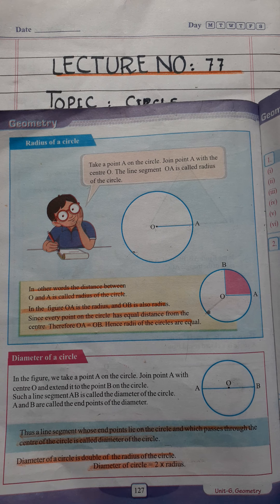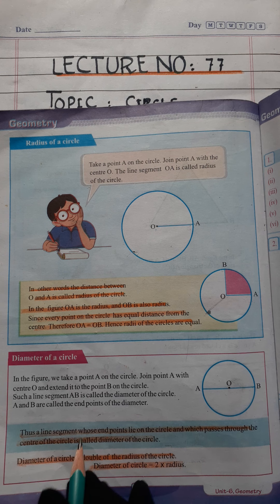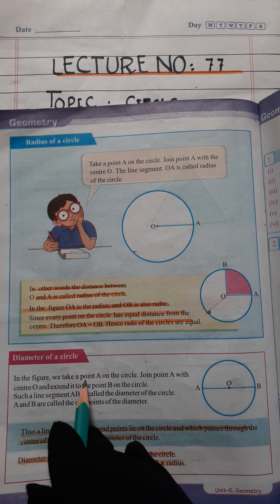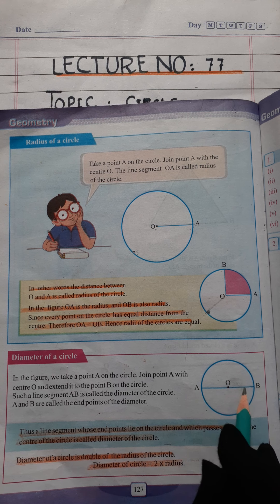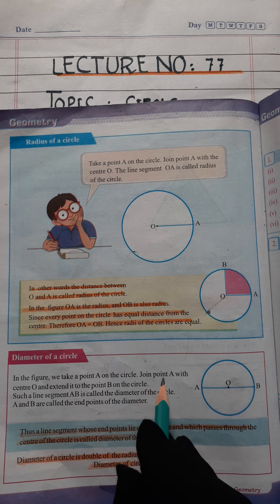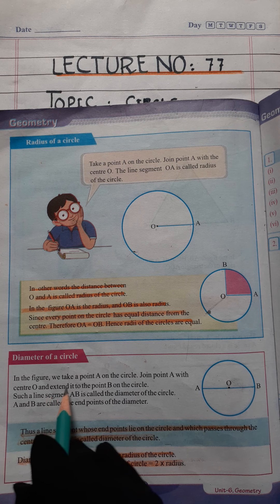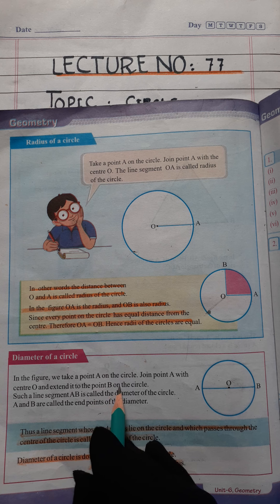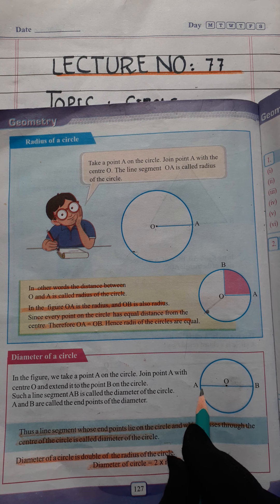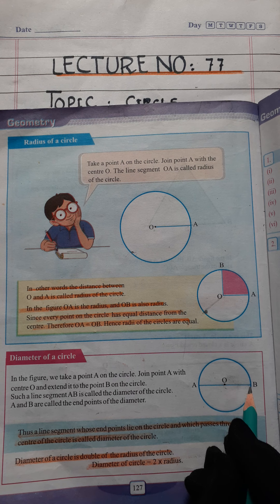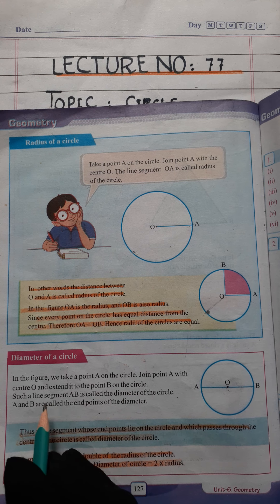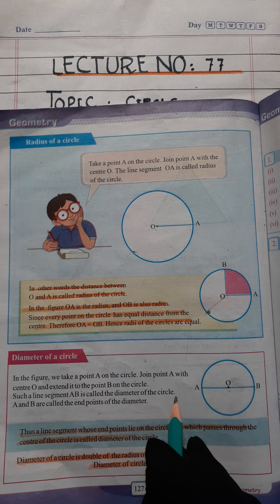Now move toward the diameter. First we did the radius, then we move toward the diameter. In the figure, take a point A on the circle. There are three points: A, O, and B. Join point A with center O and extend it to the point B on the circle.